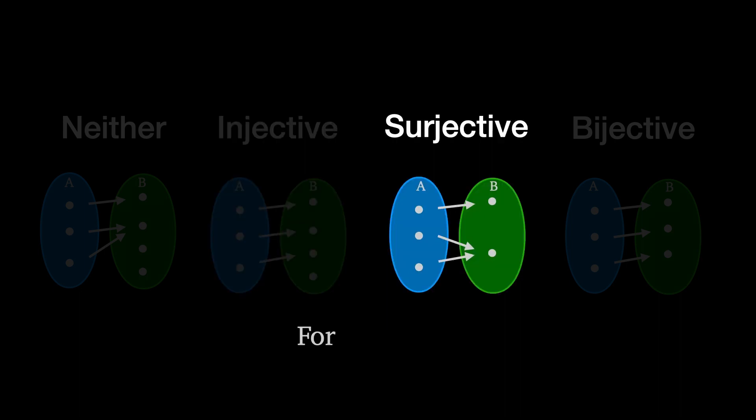A surjective function is one where every element in the co-domain B is of the form f(x). We could also define a surjective function as one where the image of f is equal to the co-domain, and surjective functions are sometimes referred to as onto.